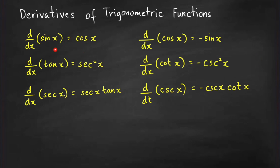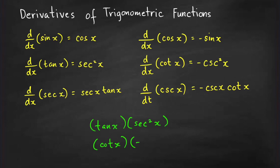To remember the remaining four formulas, keep in mind these pairs: tan x and sec squared x, and cot x and negative csc squared x. The derivative of tan x is sec squared x. When you take the derivative of sec x, just take the remaining factors: sec x times tan x. Similarly, the derivative of cot x is negative csc squared x, and the derivative of csc x uses the remaining factors: negative csc x times cot x.